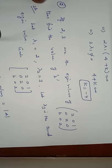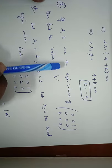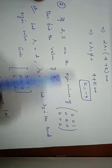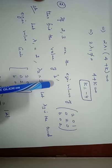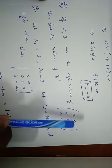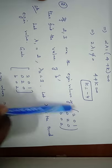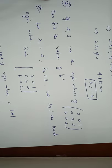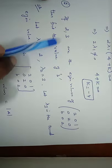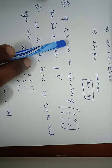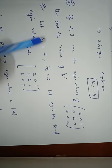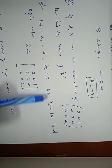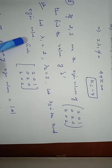Moving to problem 2: If 2 and 3 are eigenvalues of the matrix [2, 0, 1; 0, 2, 0; B, 0, 2], find the value of B. Since it is a 3×3 matrix, there are 3 eigenvalues. We assume Lambda 1 = 2 and Lambda 2 = 3; Lambda 3 is the unknown third eigenvalue.